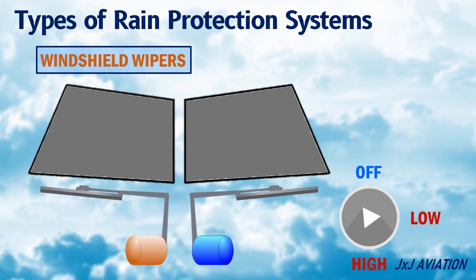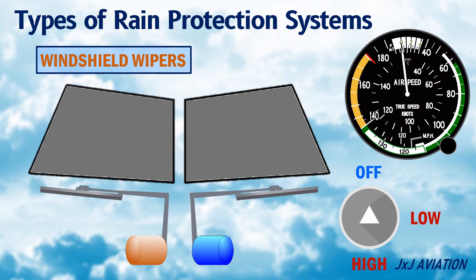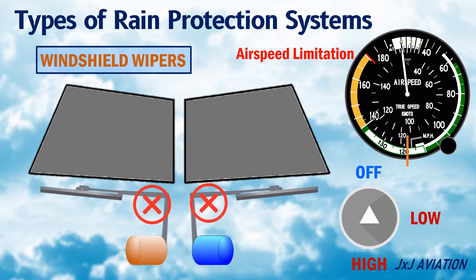When it is set to off, it will not be visible on the windshields. Normally, there is an airspeed limitation above which the wipers should not be used. Using the wipers above this airspeed may result in damage to the wiper assembly.